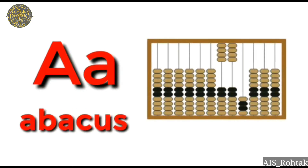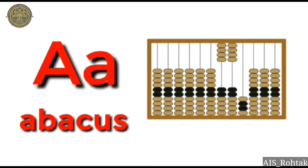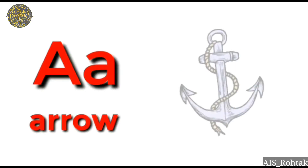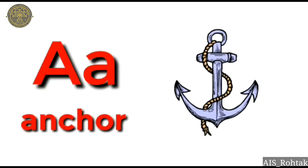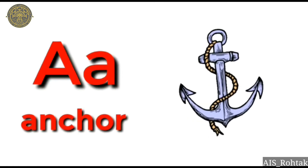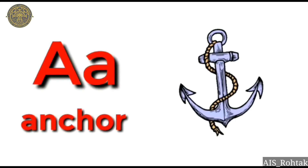A, A — Abacus. This is A, A — Abacus. A, A — Arrow. What do we call it? A, A — Arrow. This is A, A — Anchor. What do we call it? A, A — Anchor.